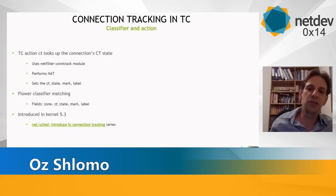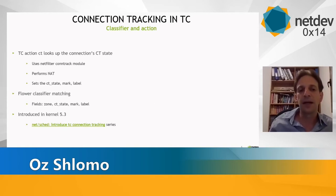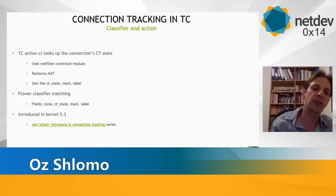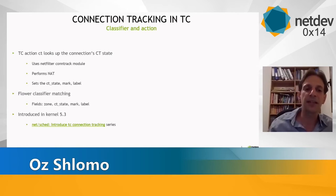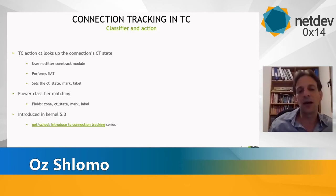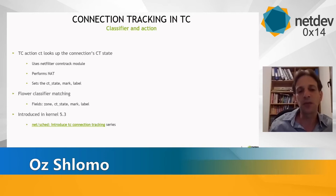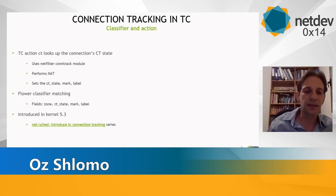To add connection tracking support to TC, we needed to add a connection tracking action and a classifier. The TC action reuses the netfilter conntrack module. When a packet enters the TC action, it calls the netfilter conntrack module, which does the connection lookup, performs NAT, and sets the CT state, mark, and label on the SKB. We also extended the flower classifier to match on the CT state, mark, and label as referenced in the SKB. The classifier and actions were added and introduced in kernel 5.3.